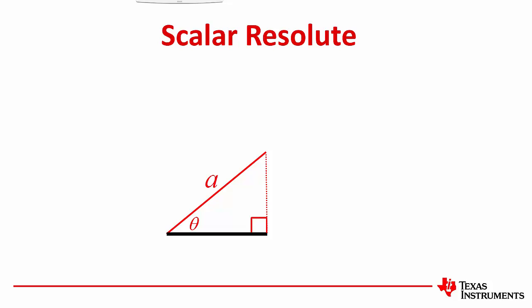So in our geometry world, that means our scalar resolute would simply be A times cos theta. Now we need to turn this back into a vector problem. So we'll put our vectors back, but now we're left with the problem of writing vector A as a scalar quantity. We do that by just taking the magnitude of vector A. And that's the scalar resolute of vector A on vector B.